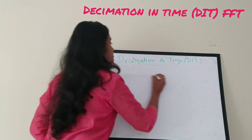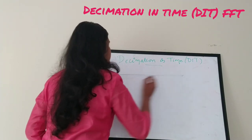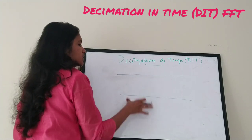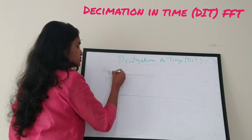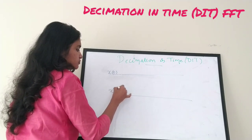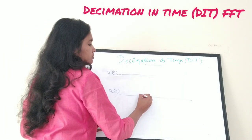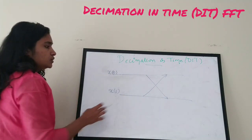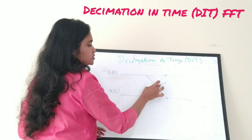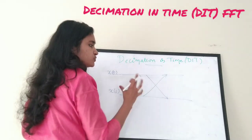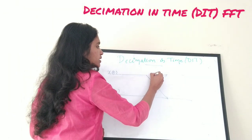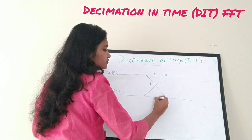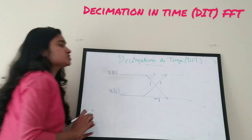The basic butterfly consists of two inputs. I'm teaching you how to draw the butterfly diagram. There are two lines, and I'm going to apply my inputs here. My first input is x of 0, my second input is x of 1. Now draw two diagonals. There are four branches — one, two, three, and four. The branch weights are: one for the first branch, one for the lower diagonal, one for the upper diagonal, and negative one for the bottom branch.